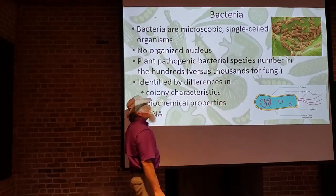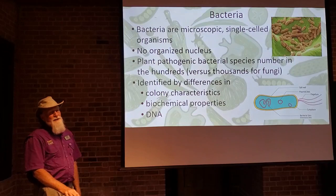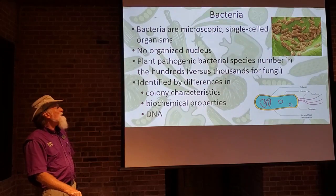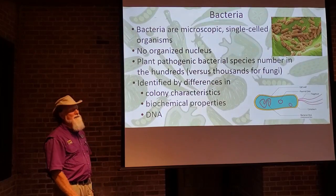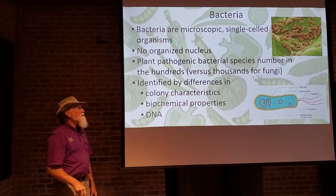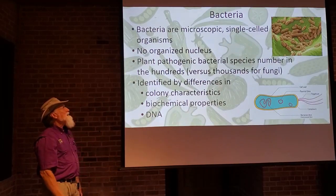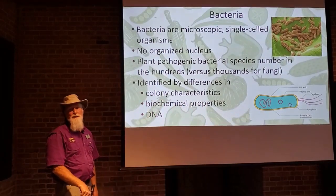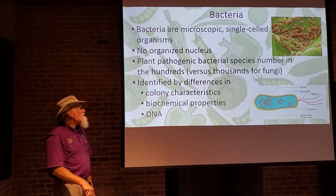Here's an electron micrograph of bacteria. Plant pathogenic bacteria number only several hundred species that cause disease, compared to several thousand species of fungi. To identify a bacterium to genus and species, you need colony characteristics on artificial media, the biochemical properties, and DNA analysis. Just looking at pictures of bacteria, they often look very much alike and it's hard to tell one from another, so you have to resort to different means.